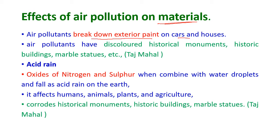Effects of air pollution on materials: air pollutants break down the exterior paint on cars and houses. Air pollutants have also discolored historical monuments, historical buildings, and marble statues — the Taj Mahal is a well-known example.